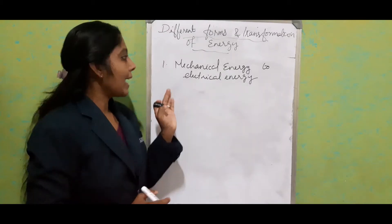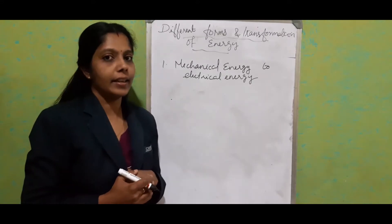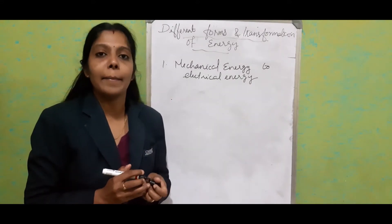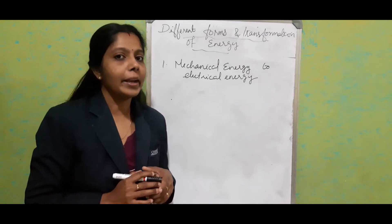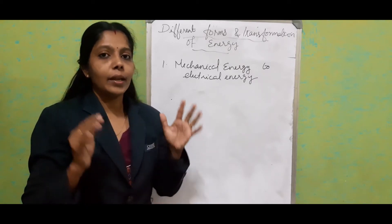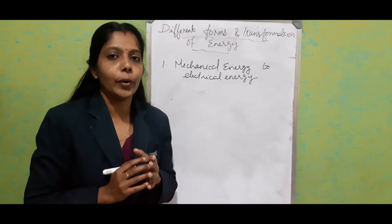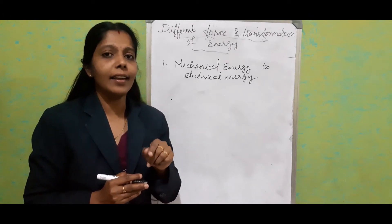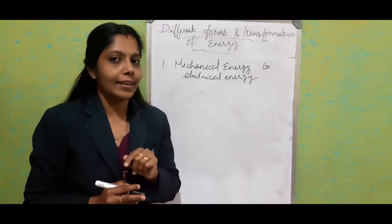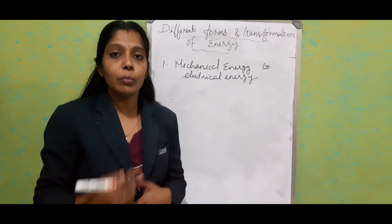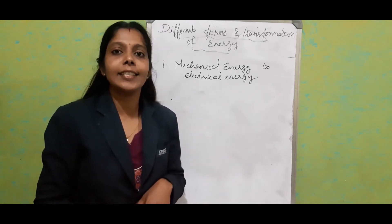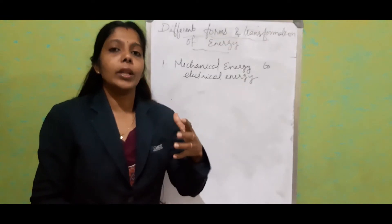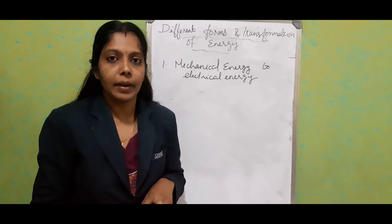First one: mechanical energy to electrical energy. Consider the example of a dam — a hydroelectric power station. When water is stored in the reservoir, it possesses mechanical energy, or particularly potential energy. When the water starts moving, that potential energy is converting into kinetic energy, and we allow the water to fall on a turbine.